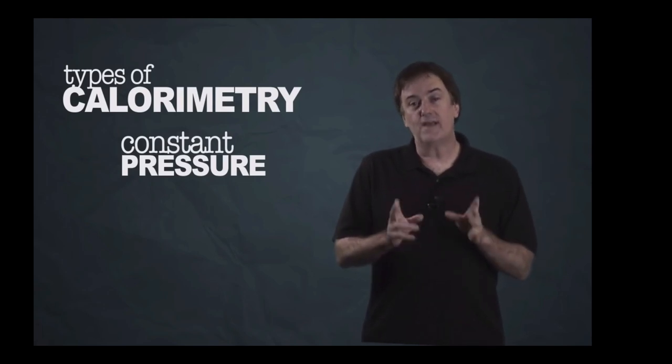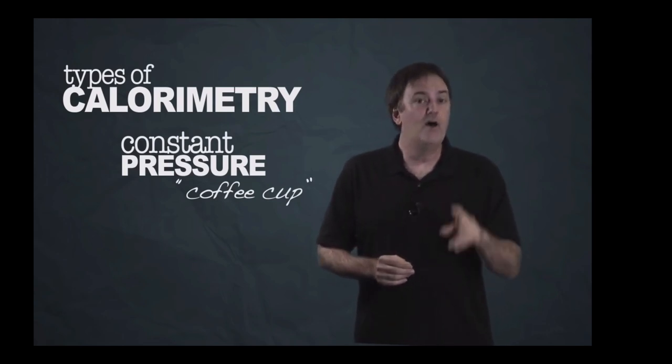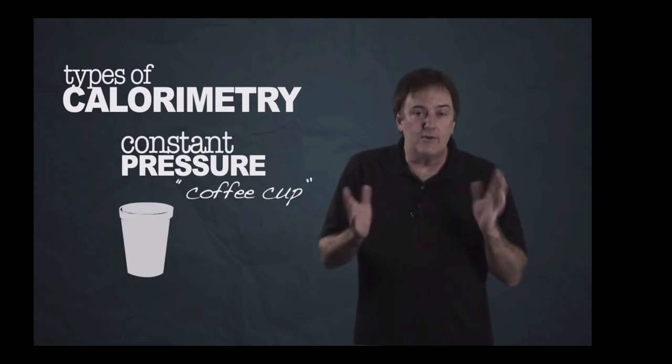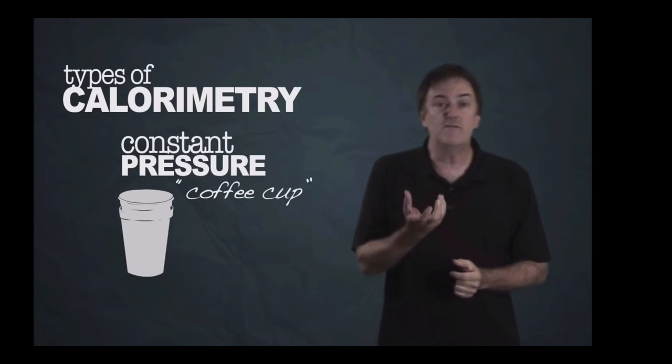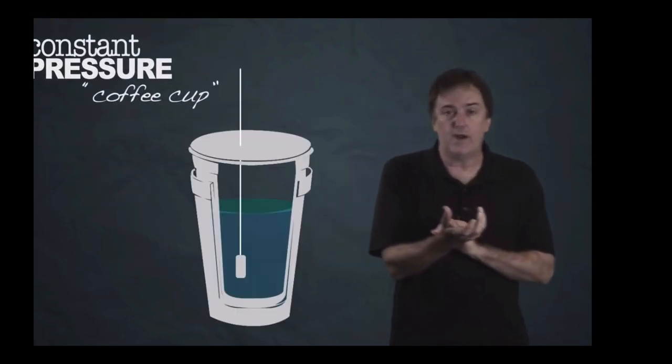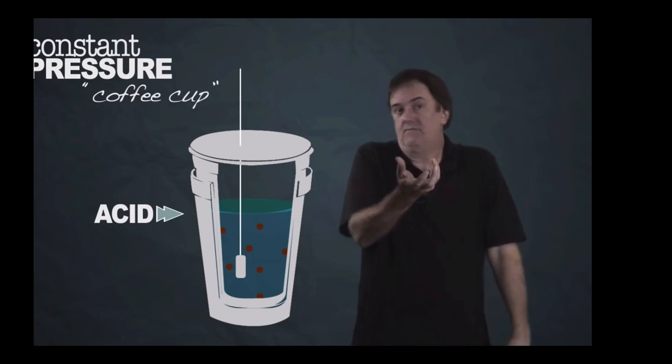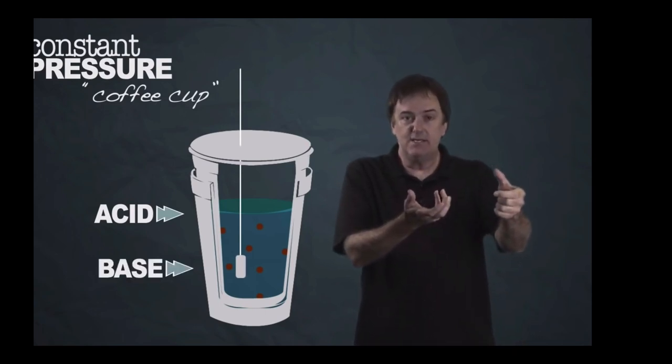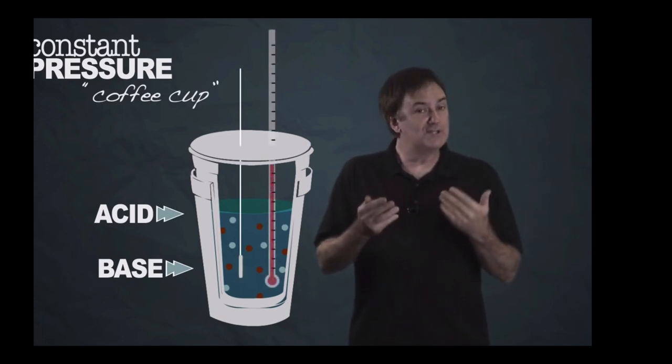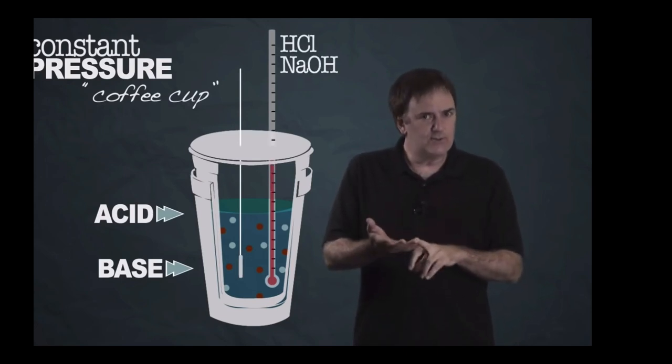Constant pressure calorimetry, we also call it coffee cup calorimetry, which will help you remember that it's super easy to make. When we say coffee cup, what we really mean is a cheap styrofoam cup. Heck, go crazy, get two styrofoam cups and stick them in each other. You've got yourself the perfect coffee cup calorimeter. Fill it up with some water, maybe put one of your reactants in, maybe you put some acid in it so it's got acid floating in your cup of water. Now take some base, have a thermometer in it, and pour it in.